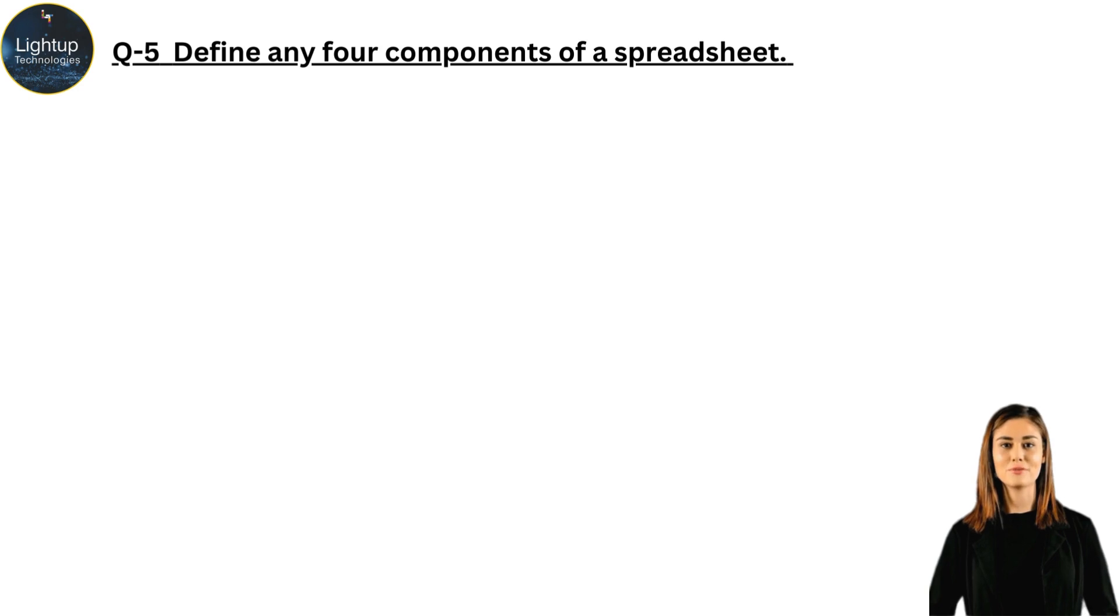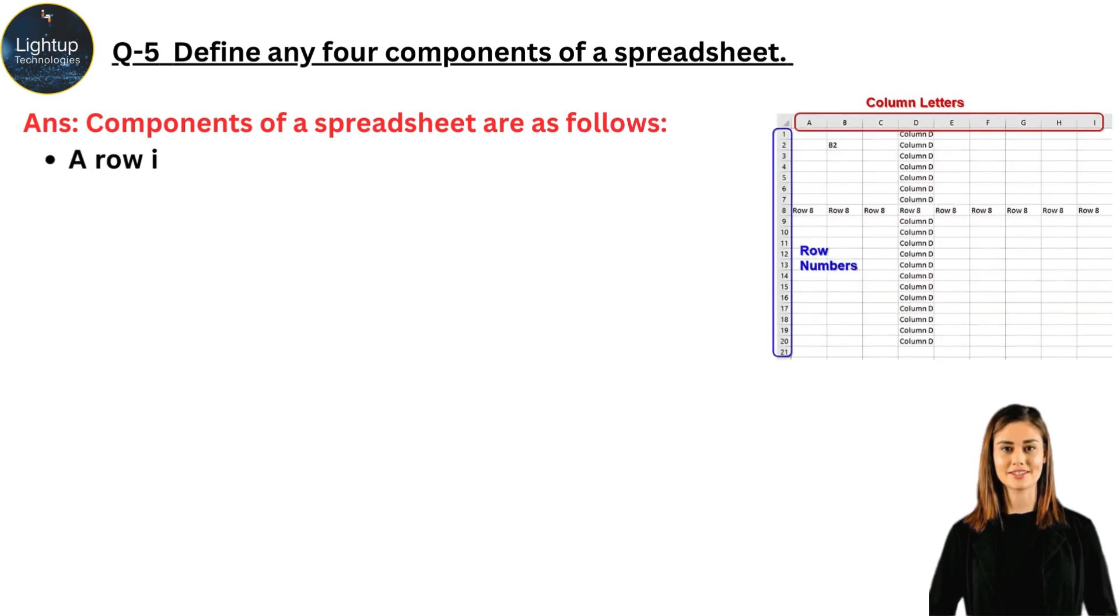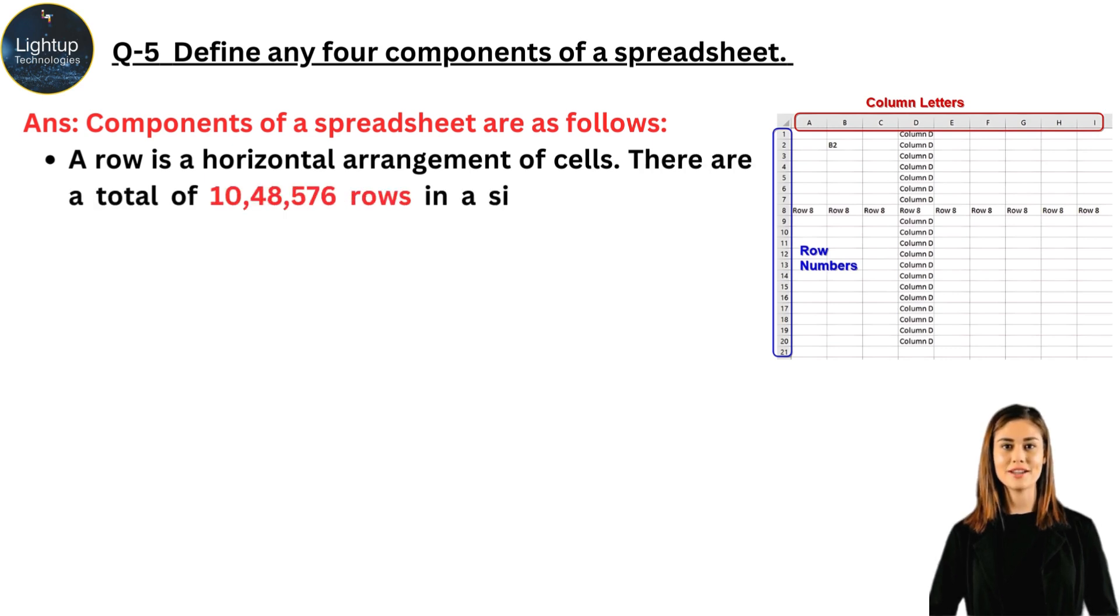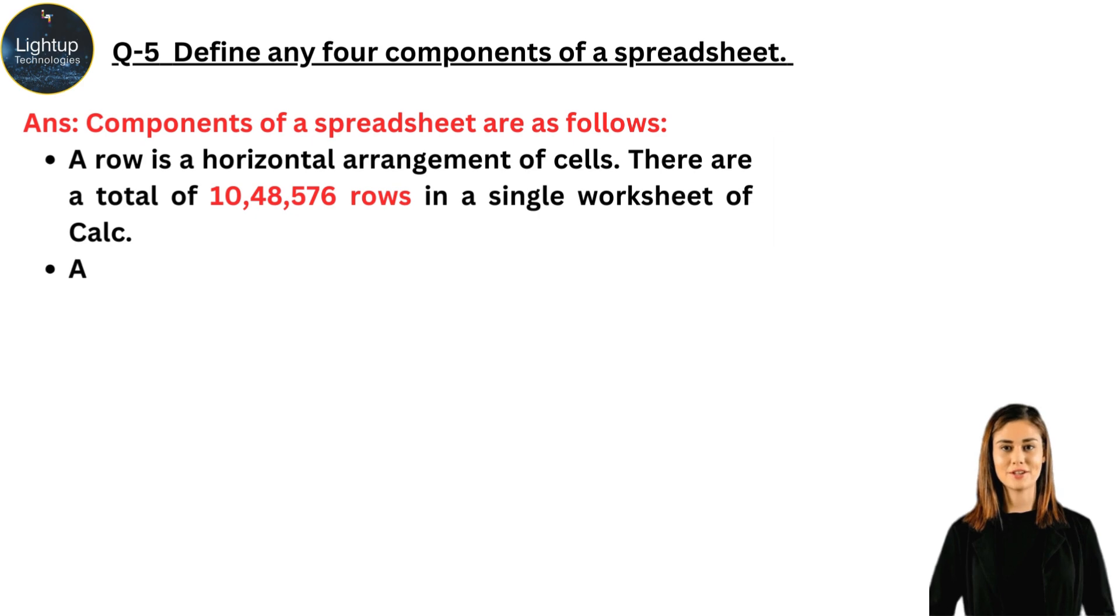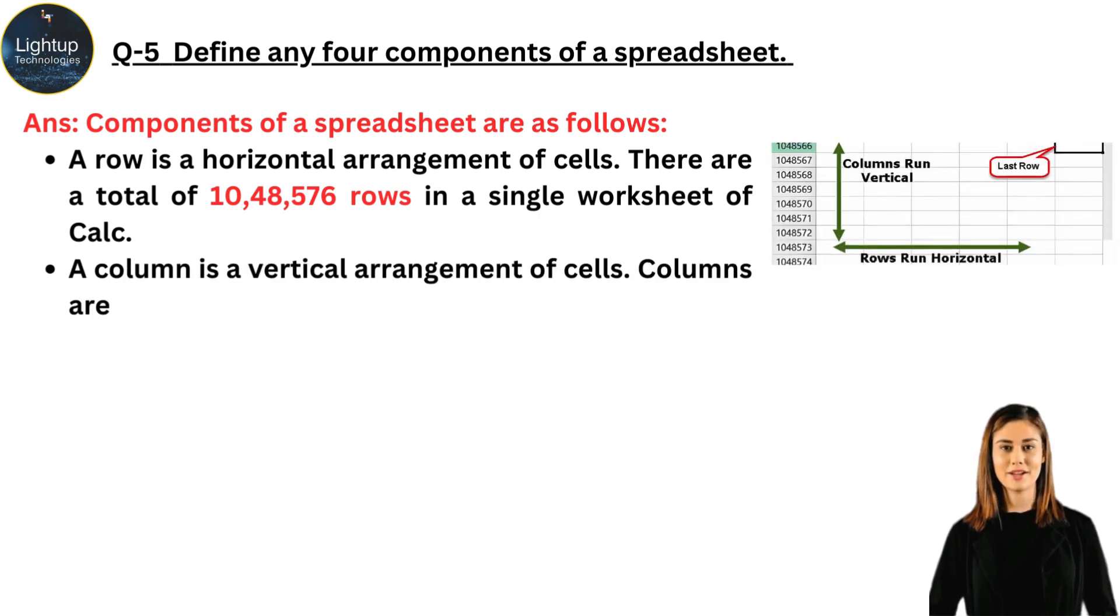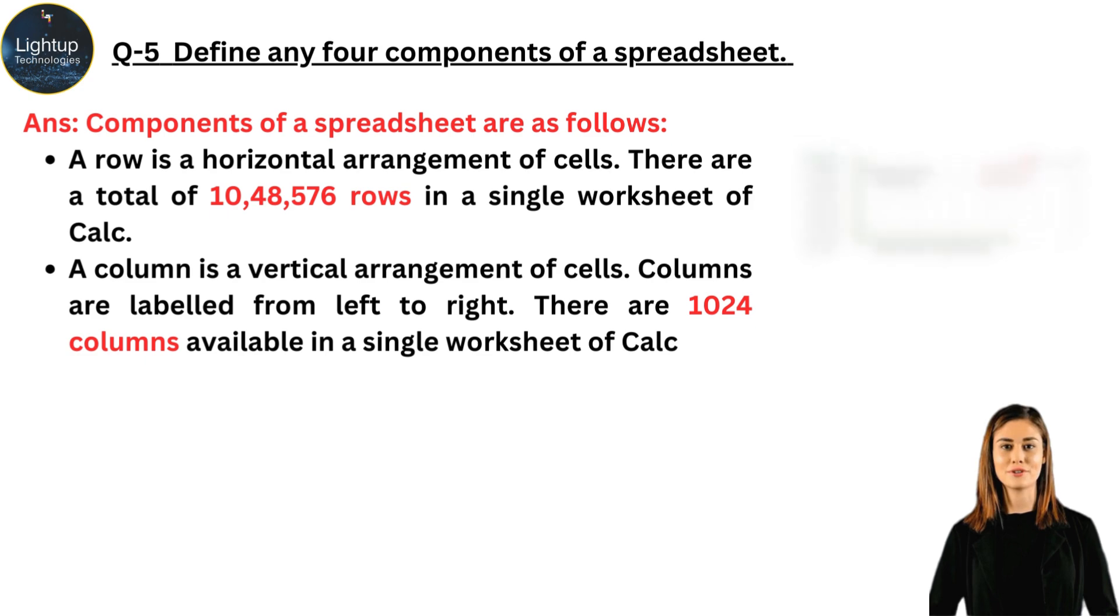Define any four components of a spreadsheet. Components of a spreadsheet are as follows. A row is a horizontal arrangement of cells. There are a total of 1,048,576 rows in a single worksheet of calc. A column is a vertical arrangement of cells. Columns are labeled from left to right. There are 1024 columns available in a single worksheet of calc.